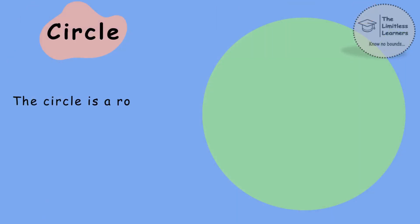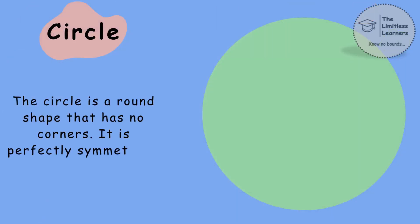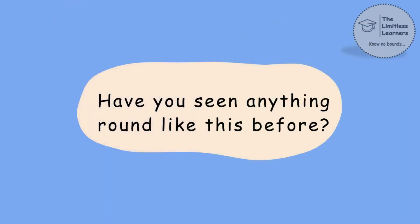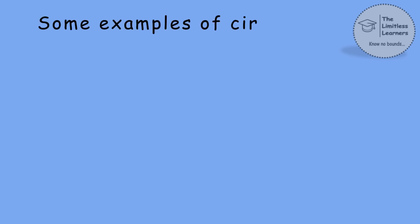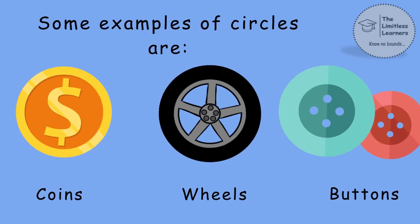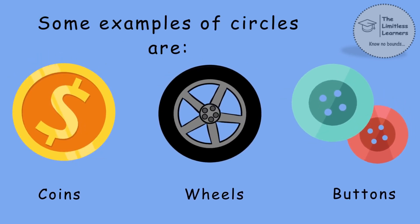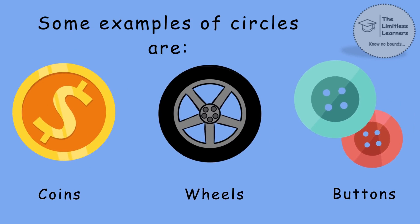Circle. The circle is a round shape that has no corners. It is perfectly symmetrical and has no beginning or end. Have you seen anything round like this before? Some examples of circles are coins, wheels and buttons.